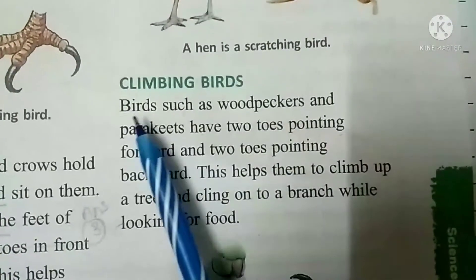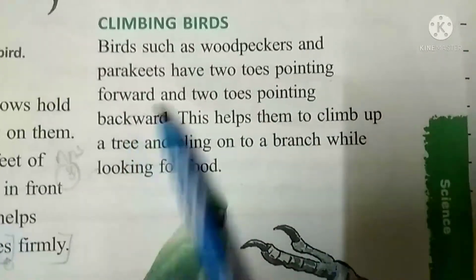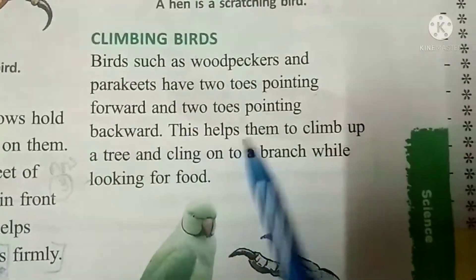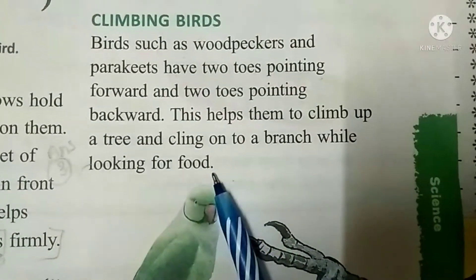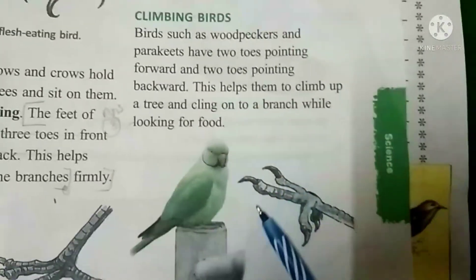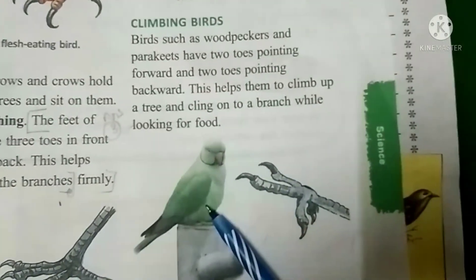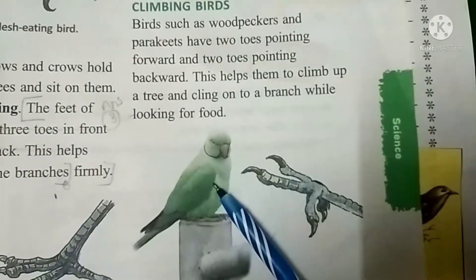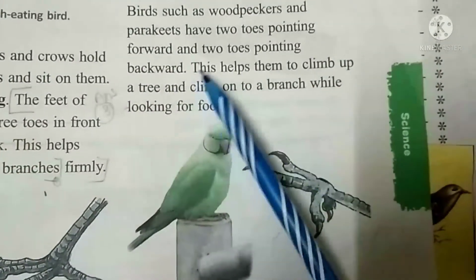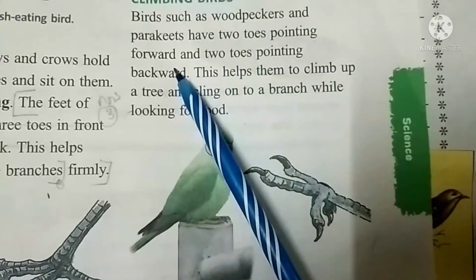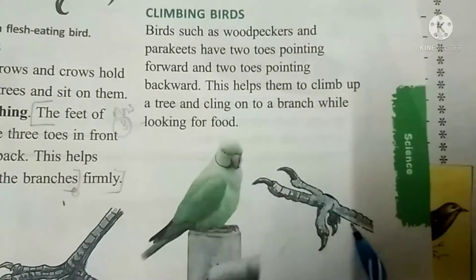Climbing birds. Birds such as woodpeckers and parakeets have two toes pointing forward and two toes pointing backward. This helps them to climb up a tree and cling on to a branch while looking for food. This is a picture of a parakeet — parakeet is a climbing bird. Two toes pointing forward and two toes pointing backward.